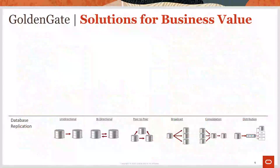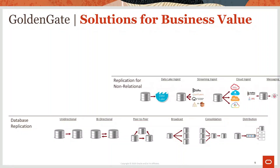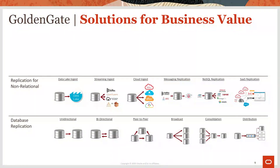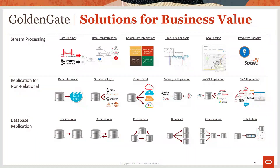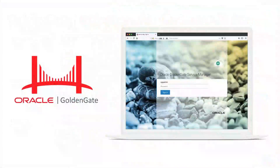GoldenGate's rock-solid foundation is the best-in-class for data high availability, high-speed transaction replication, and data warehouse loading. But modern data challenges require the most innovative solutions, and GoldenGate delivers on world-class data lake ingestion, stream data processing for real-time ETL, and advanced stream analytics that include geofencing, time-series processing, and machine learning integrations. As a platform for modern data integration, GoldenGate just can't be beat.